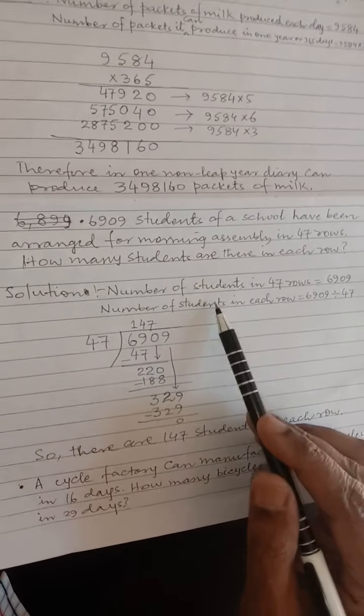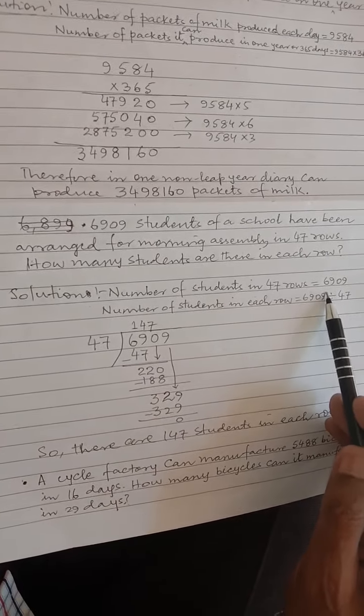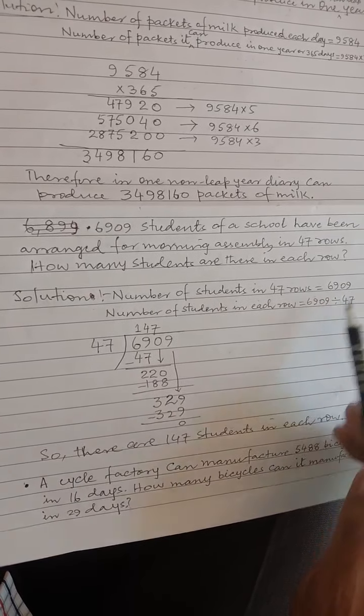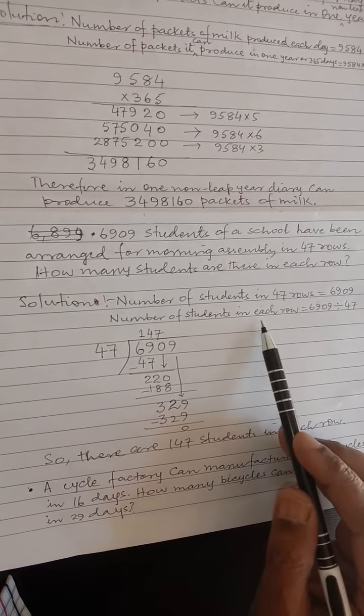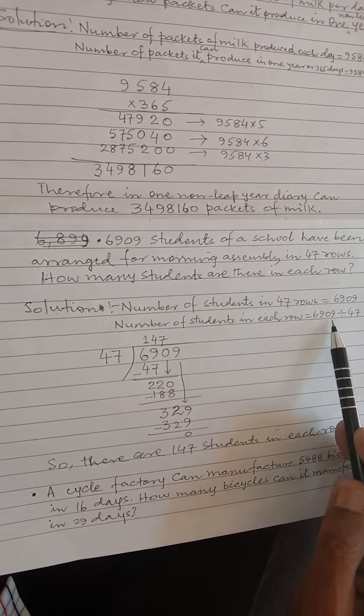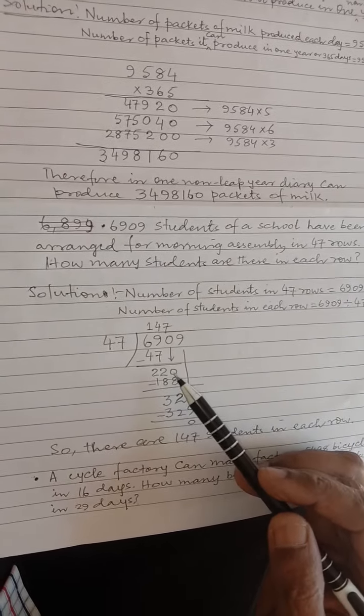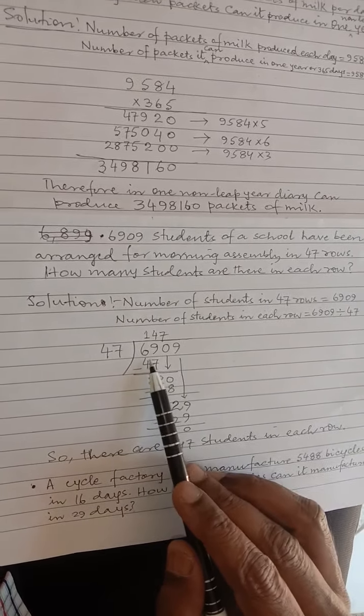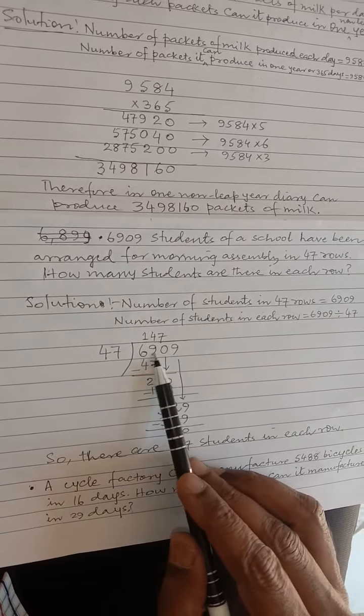The number of students in 47 rows is 6,909. The number of students in each row is 6,909 divided by 47.